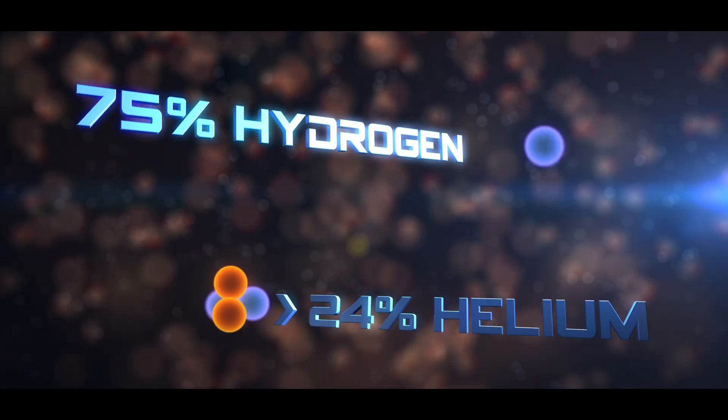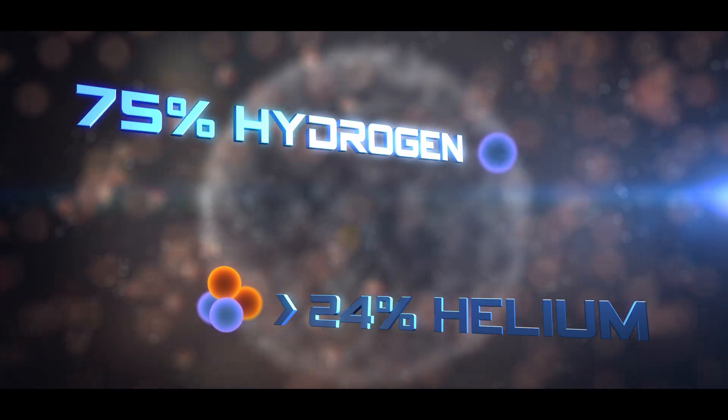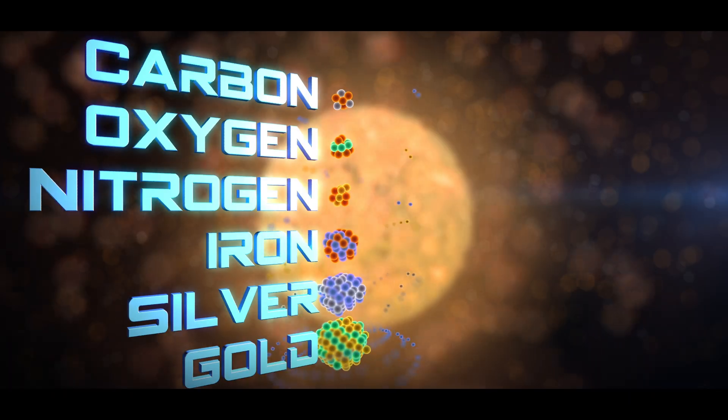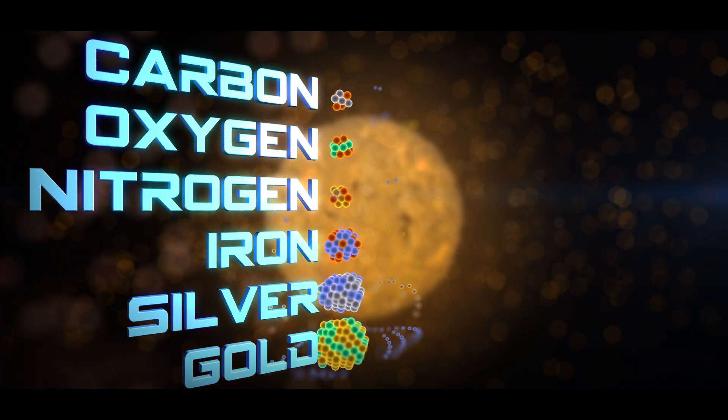It all started 14 billion years ago with an event we call the Big Bang, which resulted in a universe consisting of gas alone. There were no stars and no planets. The gas was made up only of atoms belonging to the simplest elements — about 75% hydrogen and almost all the rest was helium. No elements like carbon, oxygen, or nitrogen existed. No iron, silver, or gold.